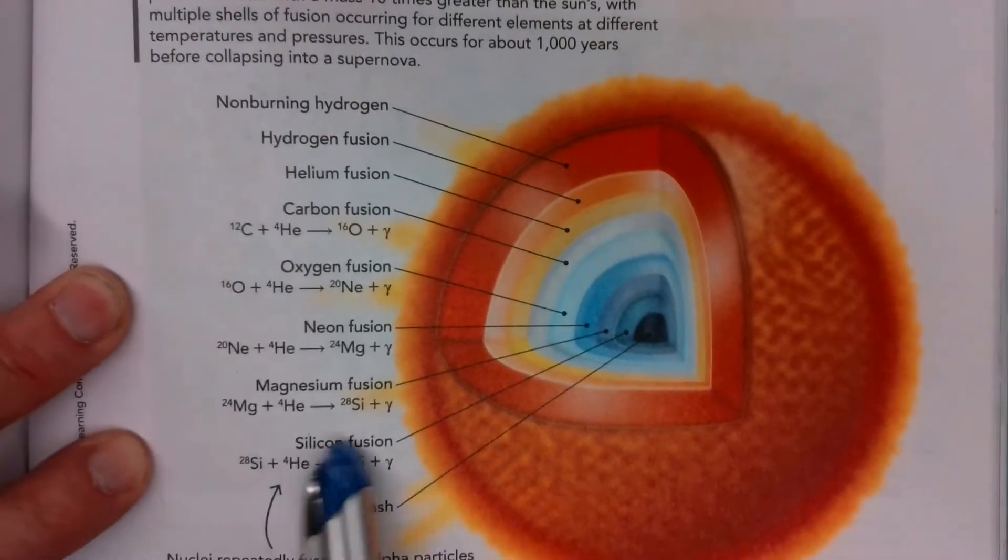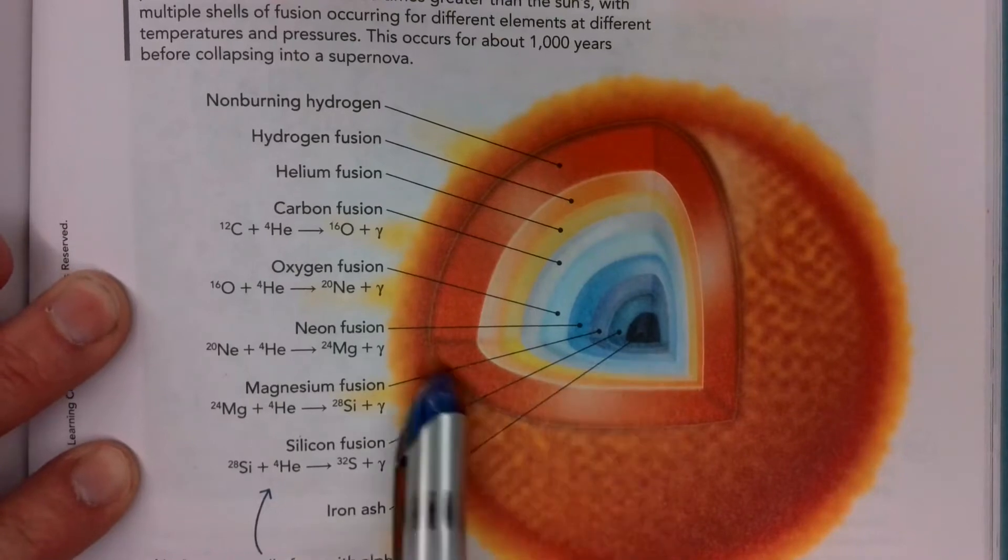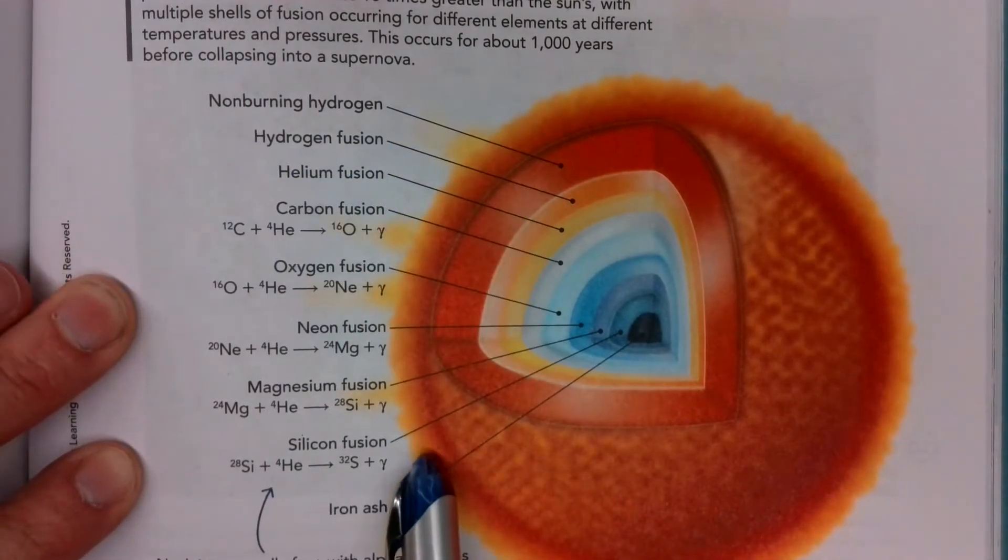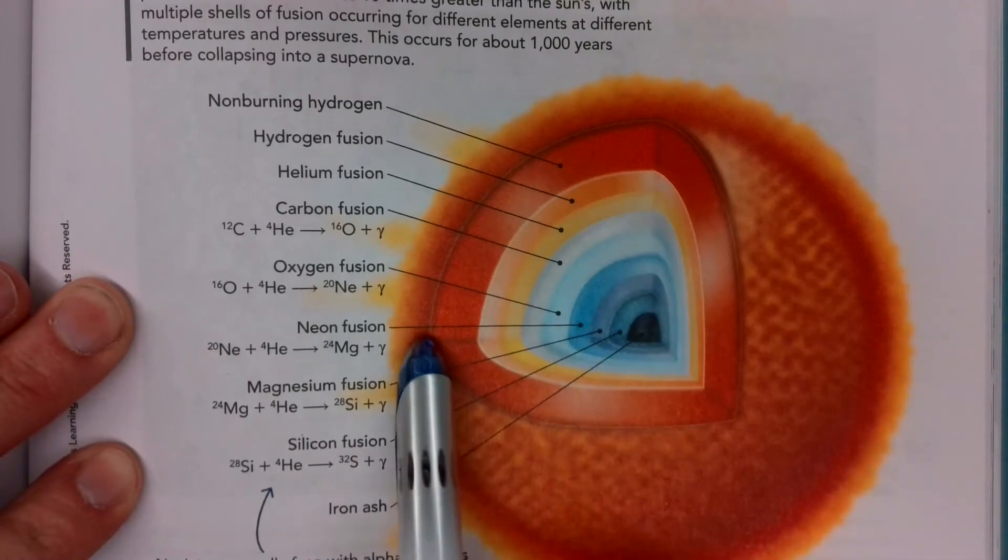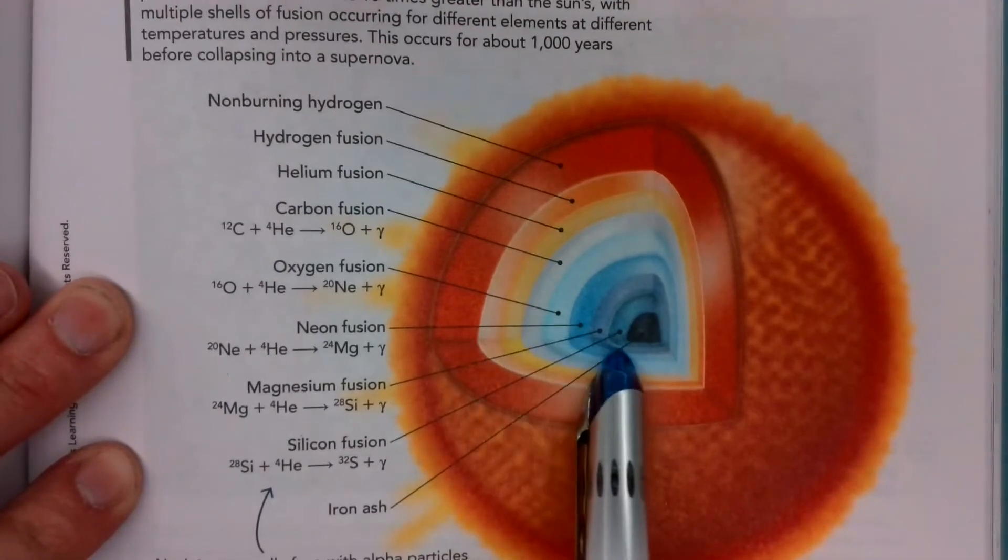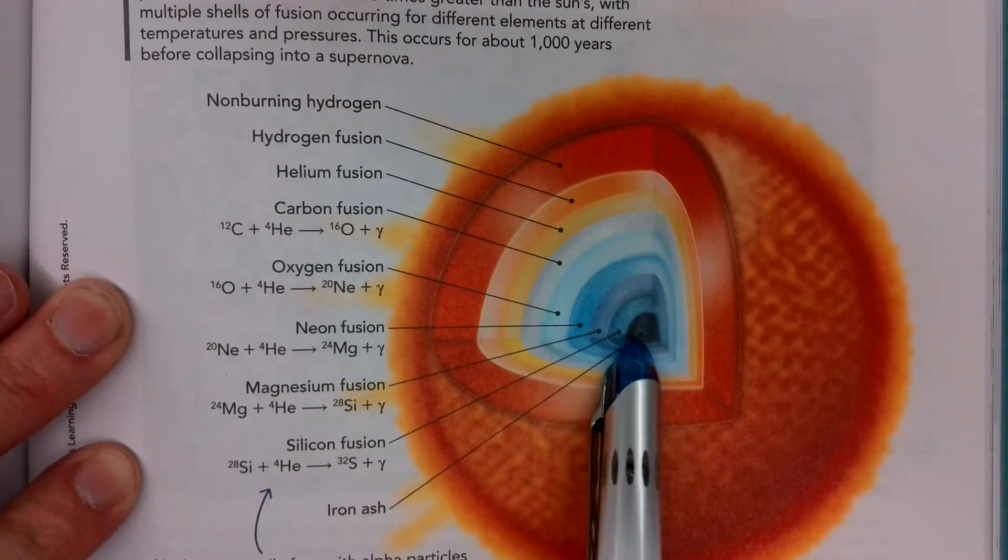And the larger the star, the more elements it's able to fuse. So if you look at this example, we have a red giant here. And what's happening is, as you work your way into the core, the temperature and the pressure increases, and you're able to fuse heavier and heavier elements.